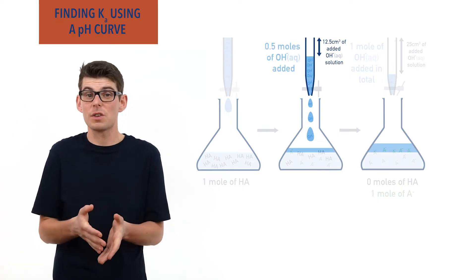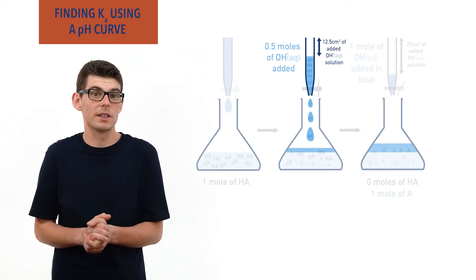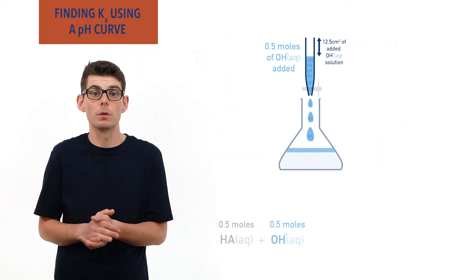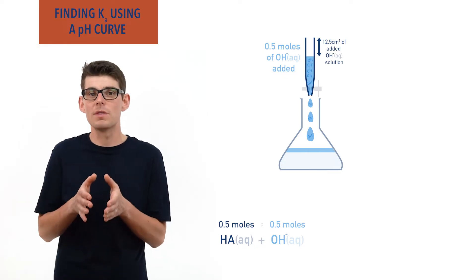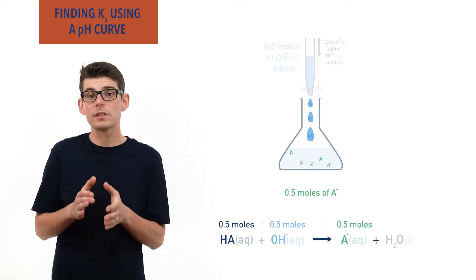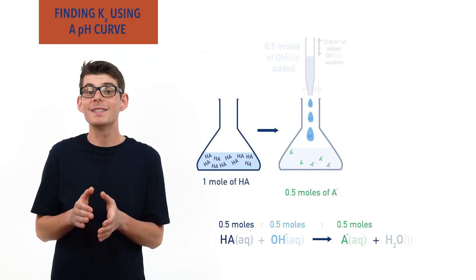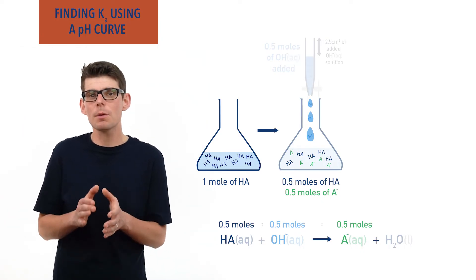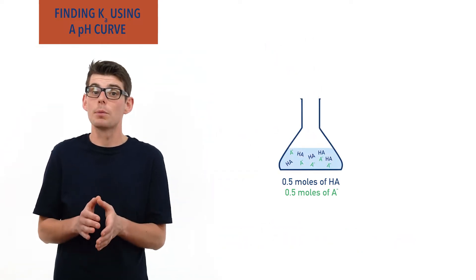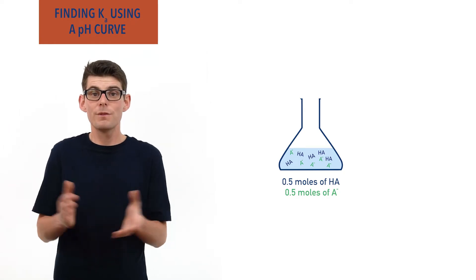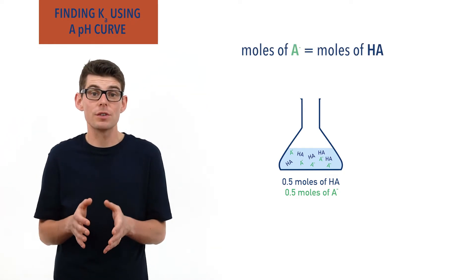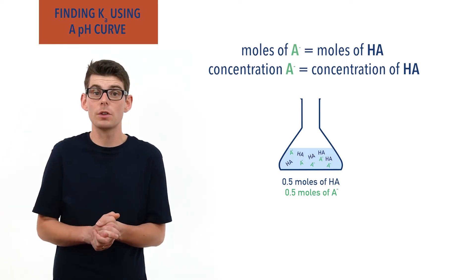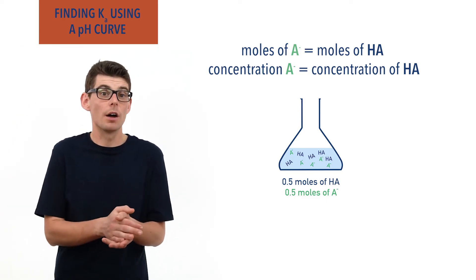If only half this volume, 12.5 cm³, of the solution is added instead, it would contain half the number of moles of OH- ions — in this case 0.5 moles. Now, 0.5 moles of OH- ions will react with 0.5 moles of weak acid HA molecules and form 0.5 moles of A-minus ions. If the starting moles of HA was one, this means 0.5 moles of HA will be left over unreacted. At this point there is 0.5 moles of HA and 0.5 moles of A-minus — the same moles of each. As a result, the concentrations of HA and A-minus will be exactly the same, as concentration equals moles divided by volume, and both HA and A-minus are in the same volume of solution.